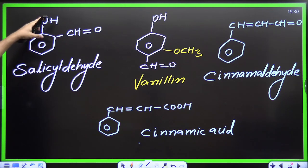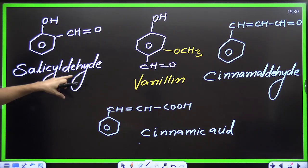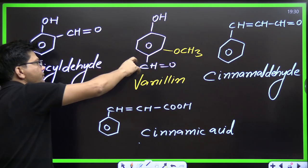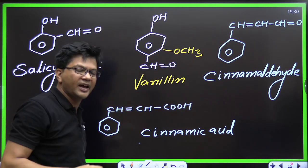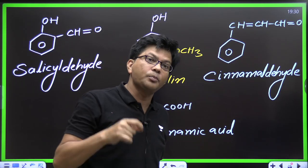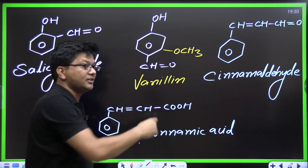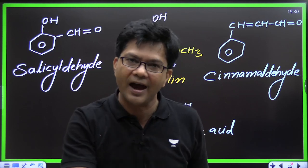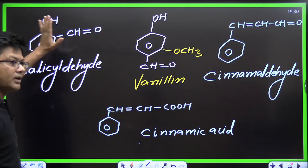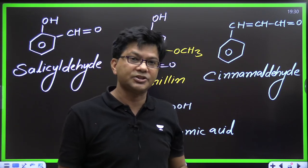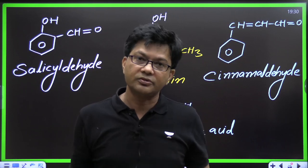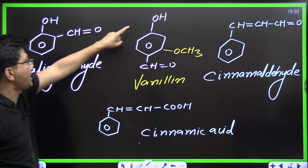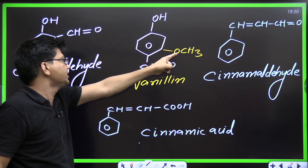Salicylaldehyde is orthohydroxybenzaldehyde. The structure is C6H4(OH)(CHO). Now, parahydroxybenzaldehyde with an extra methoxy group (OCH3) is called vanilline — yes, the flavor in vanilla ice cream. We know salicylaldehyde well from the Reimer-Tiemann reaction. Orthohydroxybenzaldehyde is salicylaldehyde; parahydroxybenzaldehyde with OCH3 is vanillin.